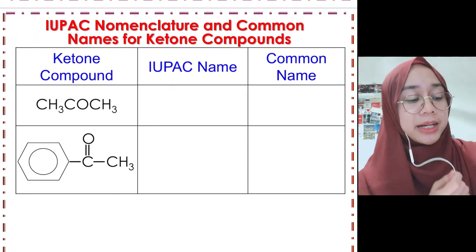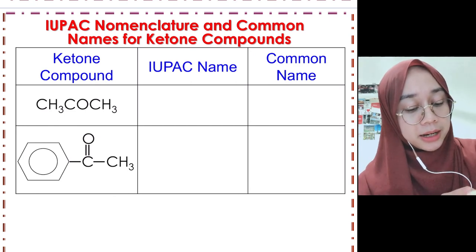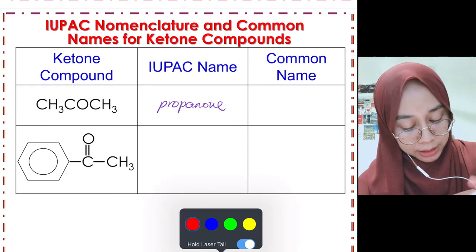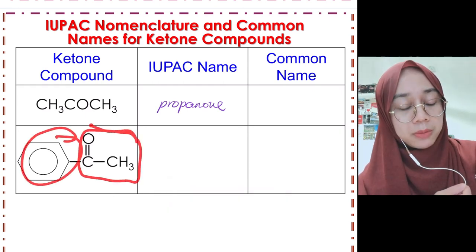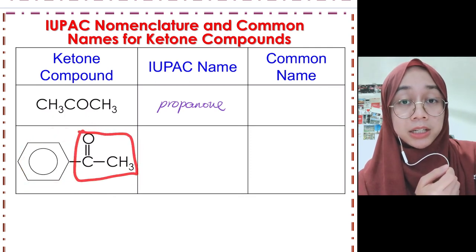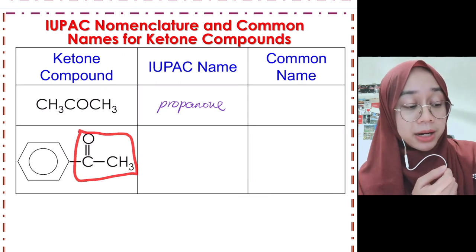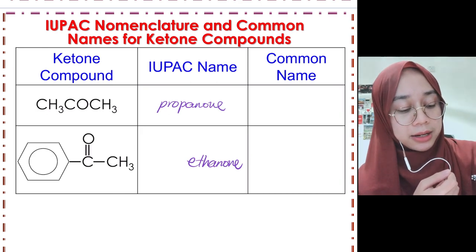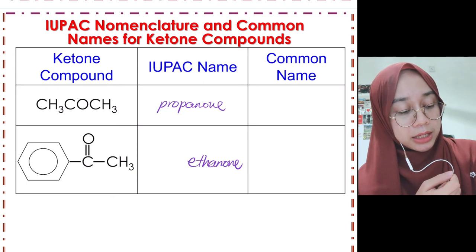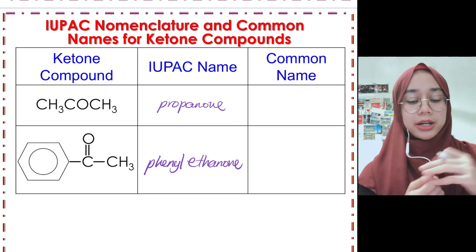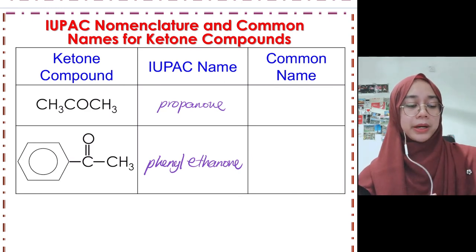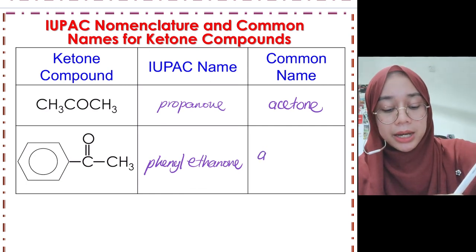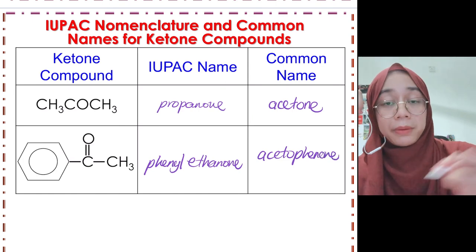For common names of ketones: a three-carbon ketone (propanone) has the common name 'acetone'. For a structure with a benzene ring and a two-carbon chain containing C=O — IUPAC name 'phenylethanone' — the common name is 'acetophenone'. This was also covered in the benzene topic.